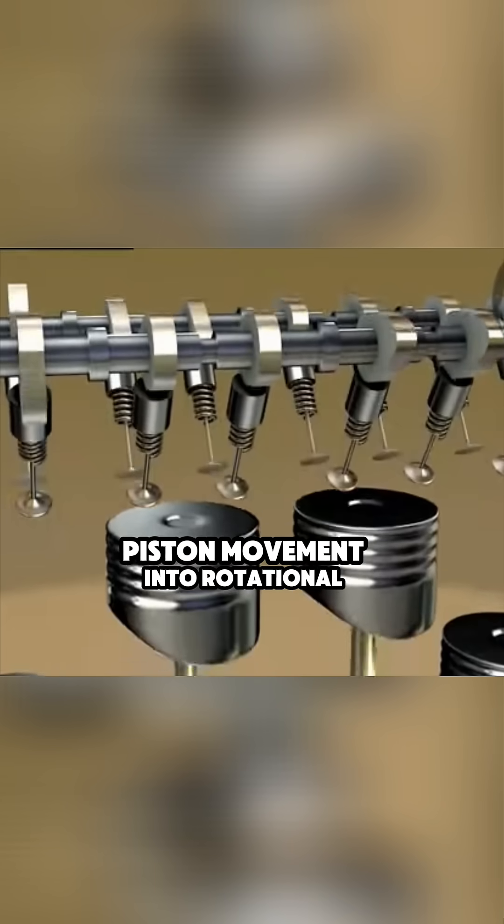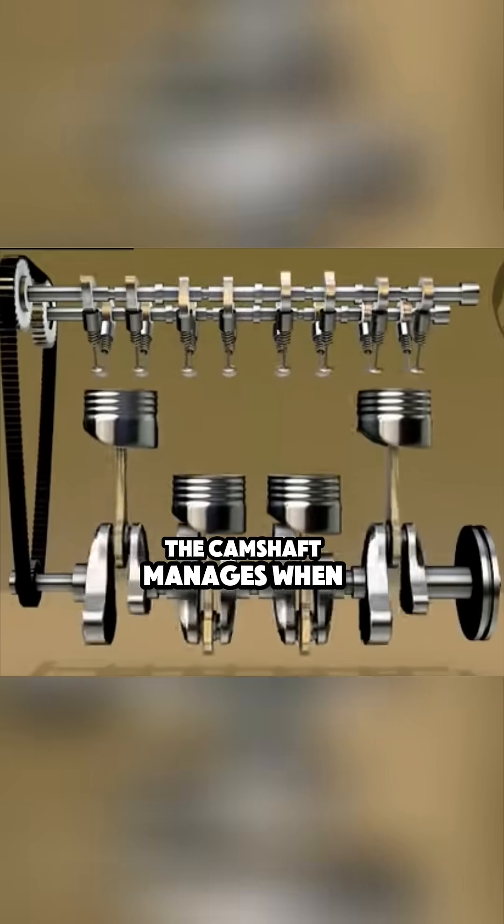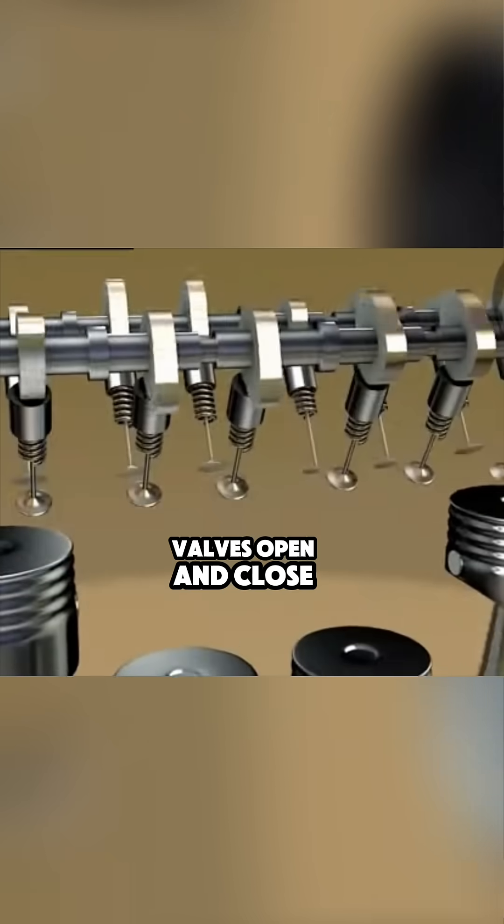The crankshaft translates that up-and-down piston movement into rotational power that drives the wheels. Meanwhile, the camshaft manages when the intake and exhaust valves open and close.